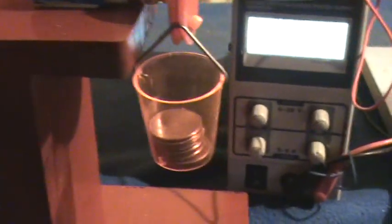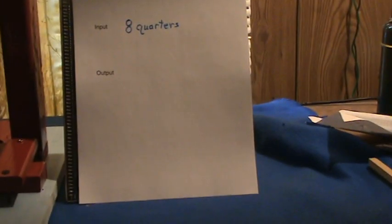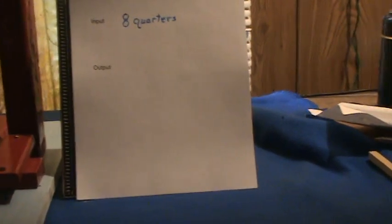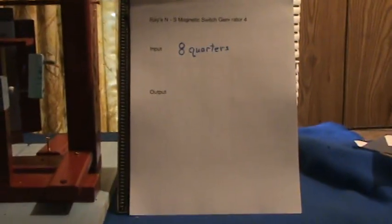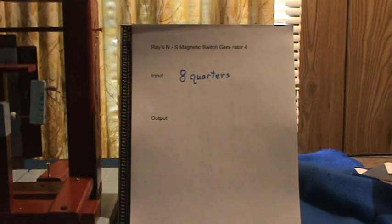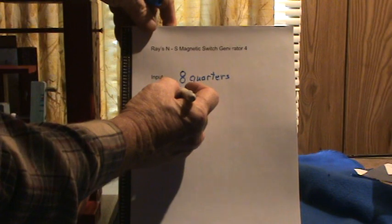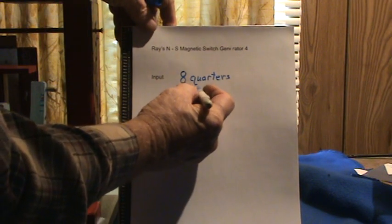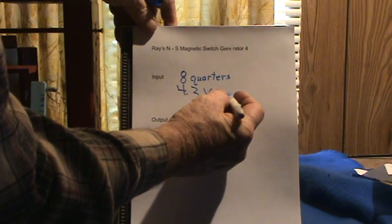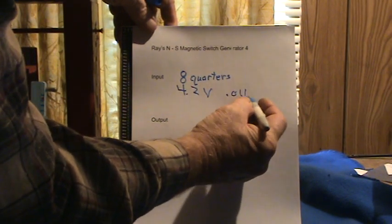There, about 4.3, 3.2. That's the voltage. The amperage is 0.04. So let's record that. To lift the 8 quarters we had 4.2 volts at 0.04 amp.